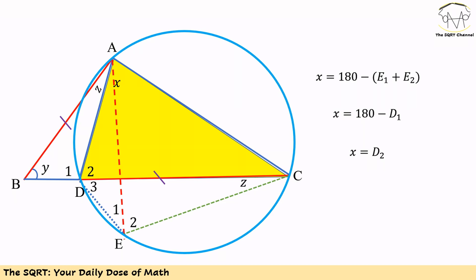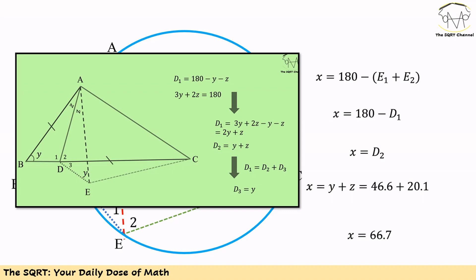180° minus D1 equals D2. So X equals D2. Going back to our earlier result, D2 equals Z plus Y, which is 20.1 plus 46.6, giving us 66.7 degrees. That is our final answer.